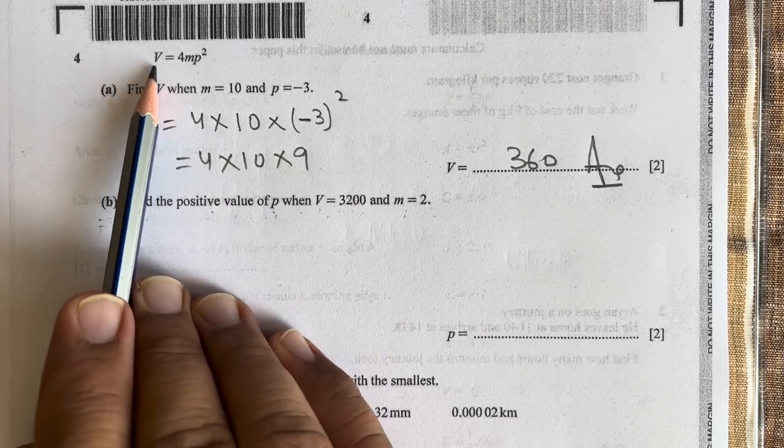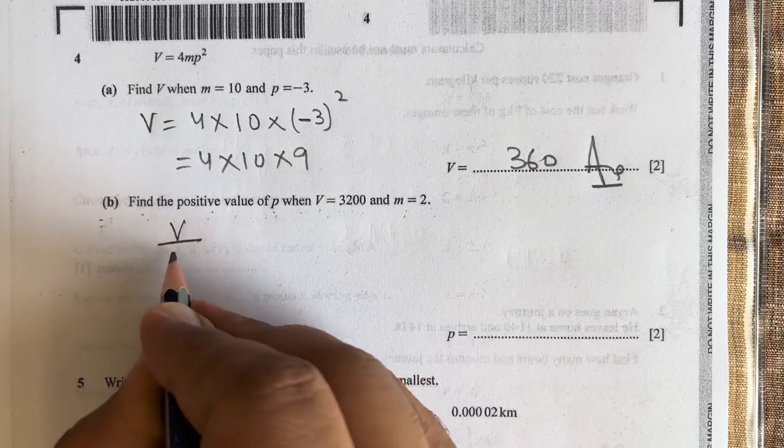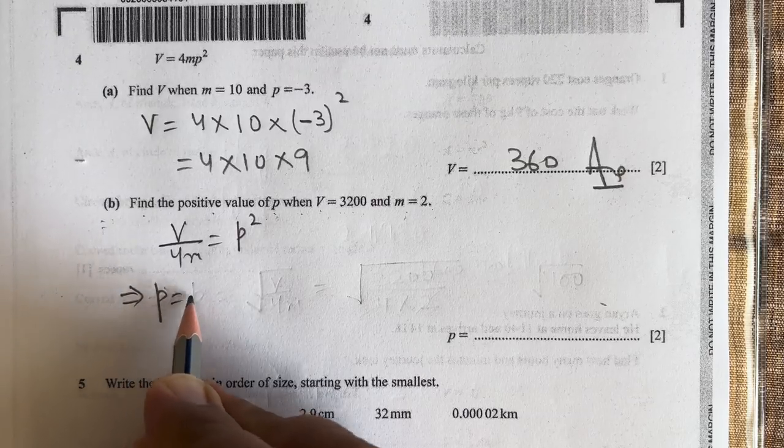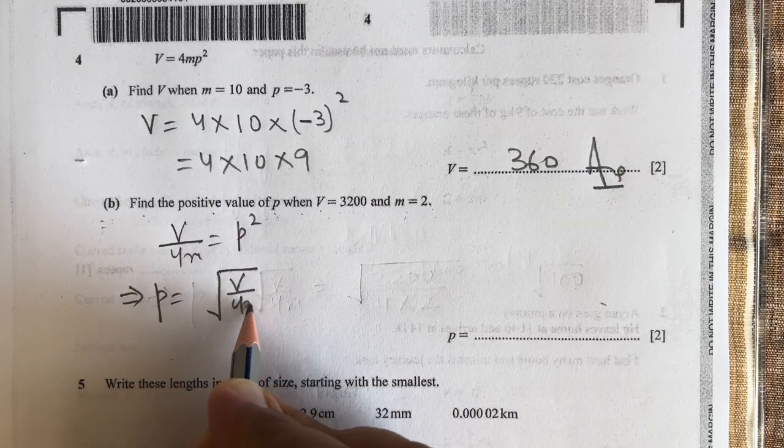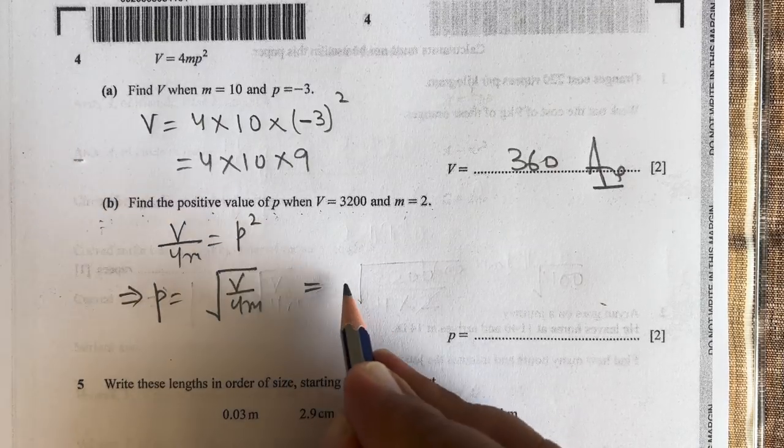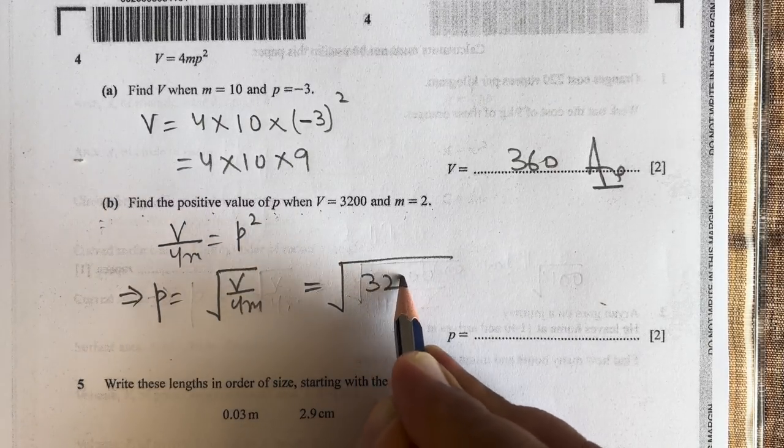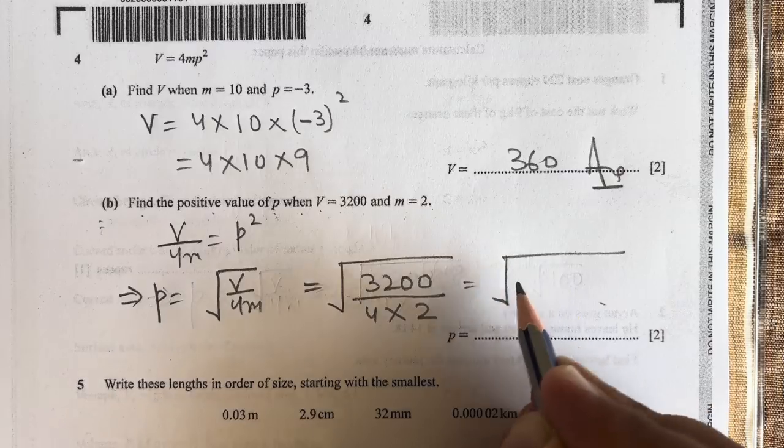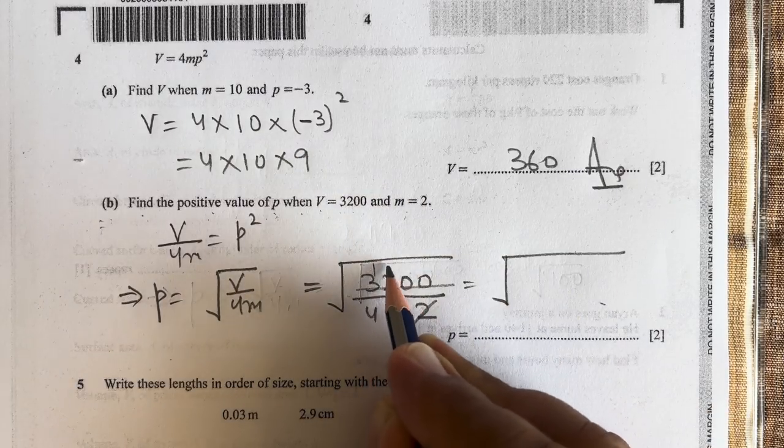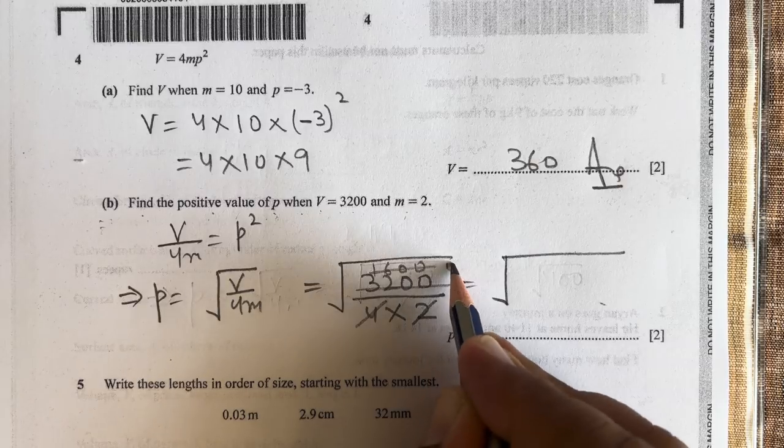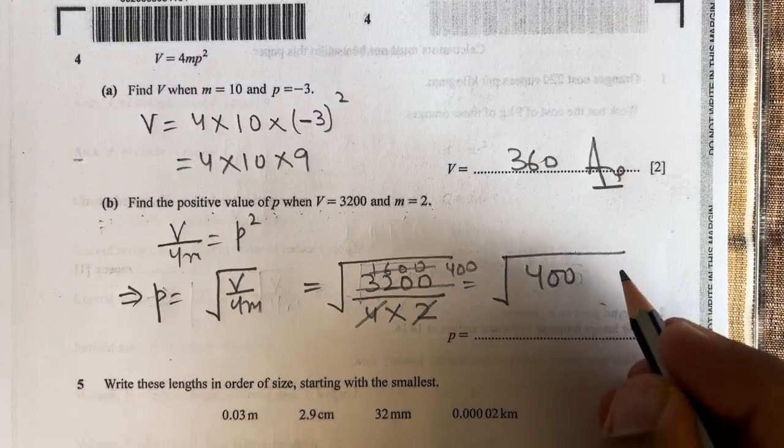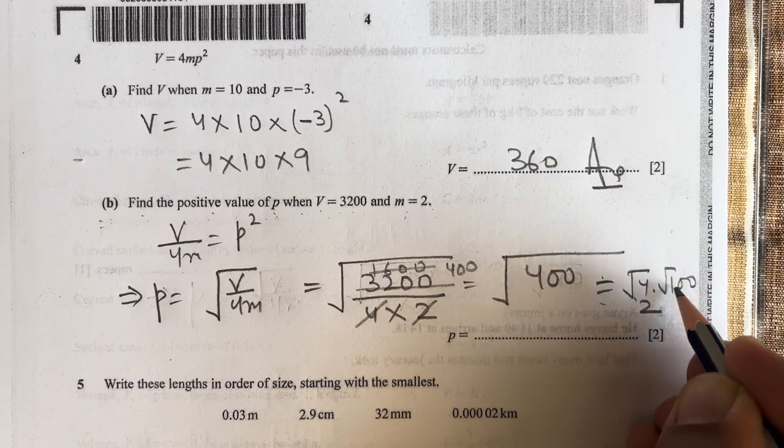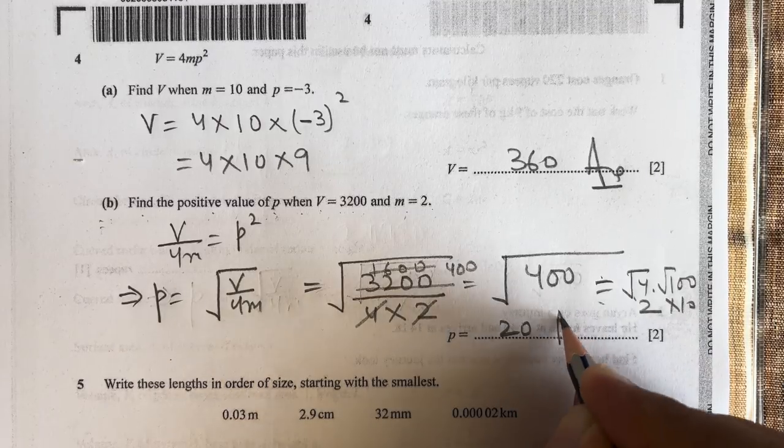Part b: Find the positive value of p when V = 3200 and m = 2. We will find the value of p from this equation. V/(4m) = p², so p = √(V/4m). Now we substitute the values: p = √(3200/(4×2)) = √(3200/8) = √400 = 20. So 20 will be the correct answer.